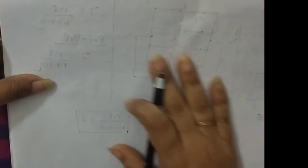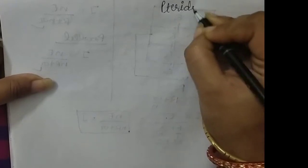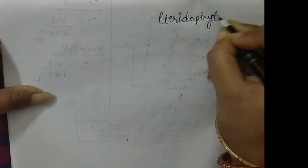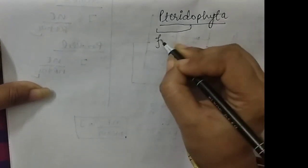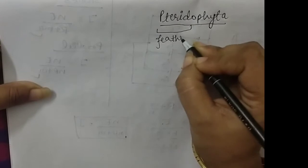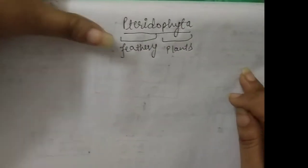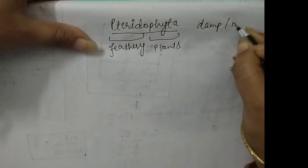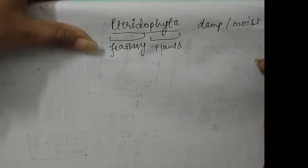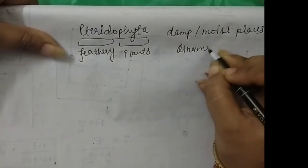Good morning class 11th biology students. Now we are going to start our next topic, that is Pteridophyta. As the word indicates, 'ptero' means feathery and 'phyta' means plants — these are feathery plants which have a feathery appearance. Basically, Pteridophyta are present on damp and moist places and they are ornamental plants.